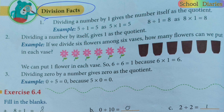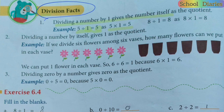So first of all, let me tell you. If we divide any number by one, just like in multiplication, the answer will be the same number. For example, five divided by one is five.